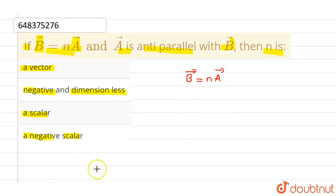That means, if this is the direction of A vector, then the direction of B vector will be exactly opposite to this particular vector. That means, somewhat in this particular direction. Let's say this is the direction of B vector.